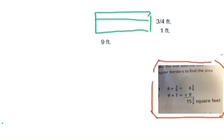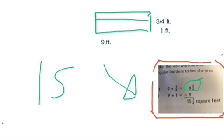Here is the answer page. This is a pretty tricky problem. There are two rectangles they have to find the area of combined. You would do 9 times 3 fourths, which would equal 6 and 3 fourths. Then you would do 9 times 1, which equals 9. Then you would add them together, which would give you 15 and 3 fourths.